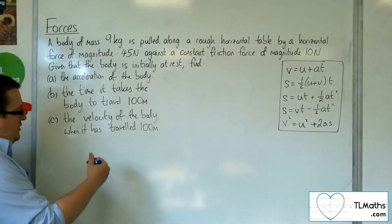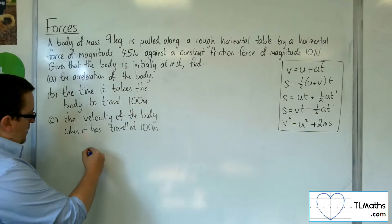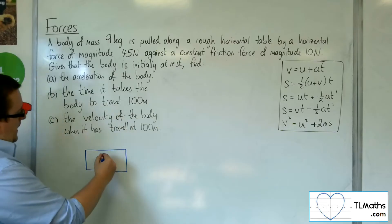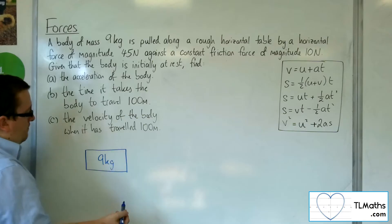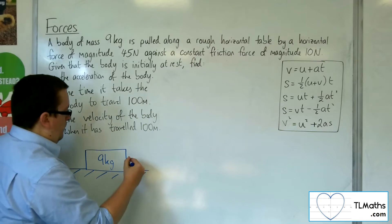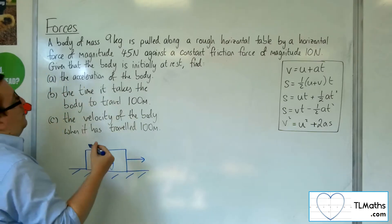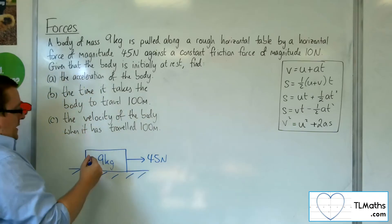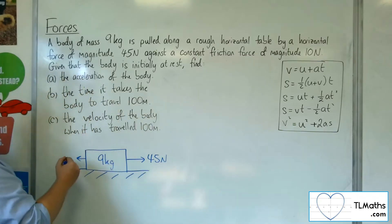OK, so we want to draw a diagram so we can visualise what's going on here. So here is the block or the body, 9 kilos is its mass. It's on a rough horizontal table. It's being pulled along by a force of 45 newtons and it's encountering a constant friction force of magnitude 10 newtons.